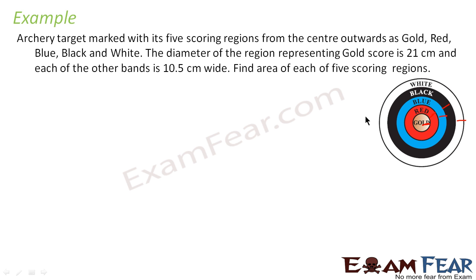So let me represent this way. First find the radius of all. So radius of gold will be equal to, diameter is given 21 cm for gold, so this radius will be 21 by 2, that is 10.5 cm. Radius of gold is 10.5.